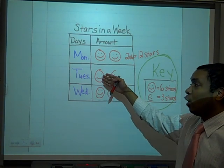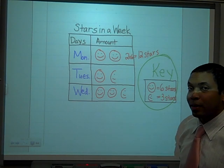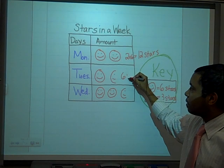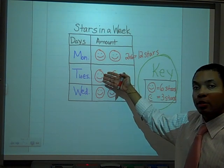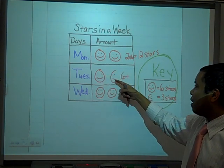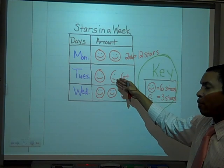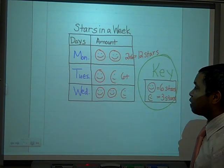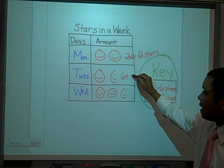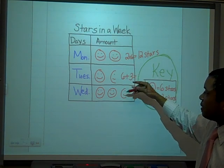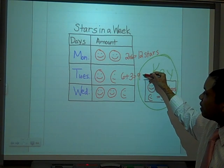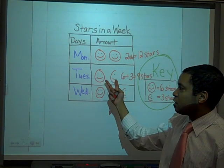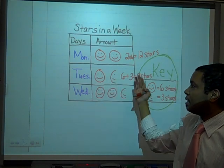On Tuesday, we have a whole smiley face and a half smiley face. One whole smiley face equals six stars. A half smiley face is worth three stars. So I'm going to add those together: six plus three gives me nine stars. On Tuesday, these two pictures represent nine stars.